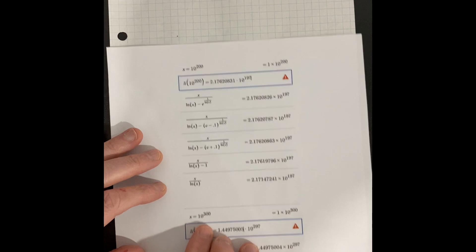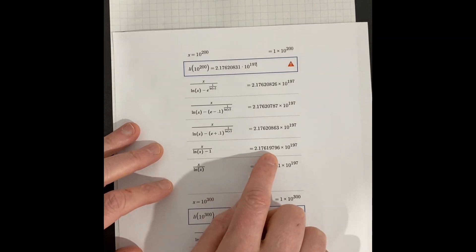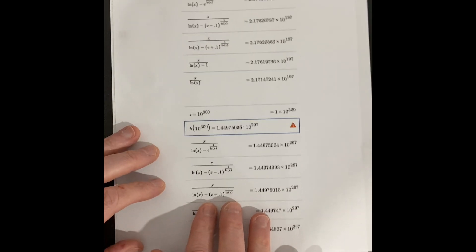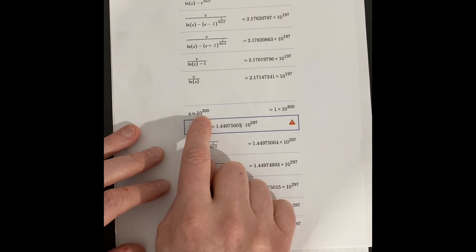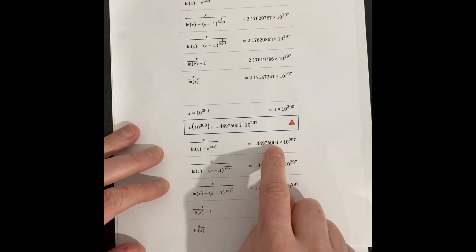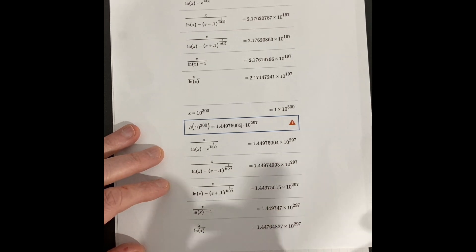And there's obviously just ln of X minus 1, way different. And this one's even way further off. And here is 10 to the 300. Same thing, you get 5,005 here at the end, 5,004, pretty close. And 0.1, minus 0.1, and plus 0.1 are way off. And these two are way further away.